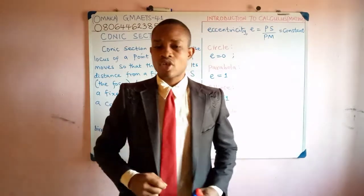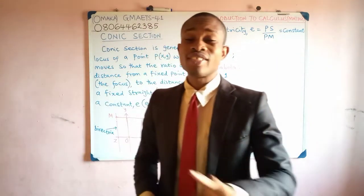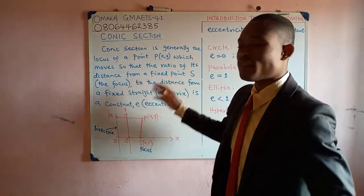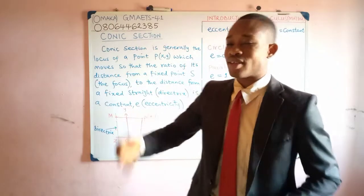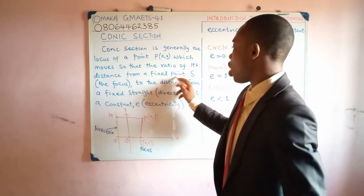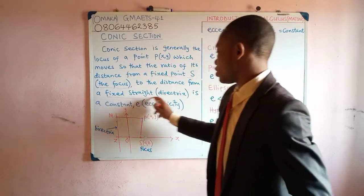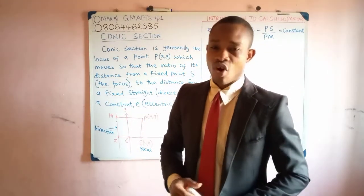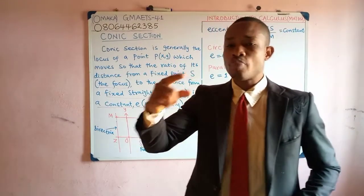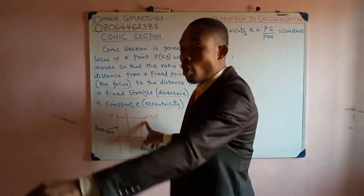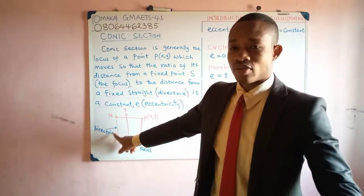Having explained how a conic section is generated, we now want to define what a conic section is, and introduce one very important constant called the eccentricity. A conic section is the locus of a point P with coordinates (x, y) which moves so that the ratio of its distance from a fixed point called the focus to the distance from a fixed straight line called the directrix is a constant called the eccentricity.